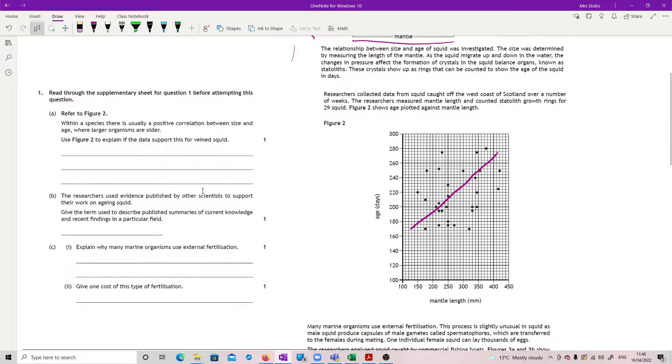Refer to figure 2. Within a species, there's usually a positive correlation between size and age, where larger organisms are older. So it's kind of nice. They're giving you, they're not just saying positive correlation, they're then telling you what they mean by positive correlation. The bigger it is, the bigger the other number is.